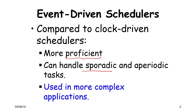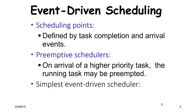Event-driven schedulers are clearly needed in much more complex applications. The scheduling points in event-driven scheduling are essentially determined by task completion and arrival events — whenever a task arrives, that's an event; when a task completes, that is also an event, though other events can be added as well. These are primarily preemptive schedulers in the sense that on the arrival of a higher priority task, the running task may be preempted.